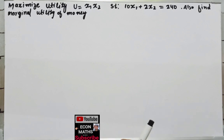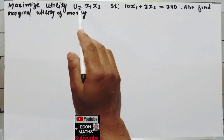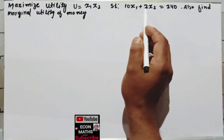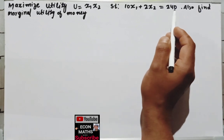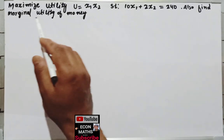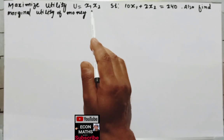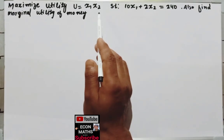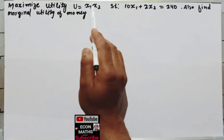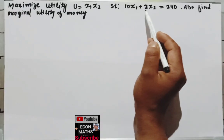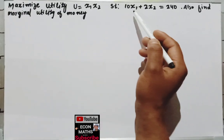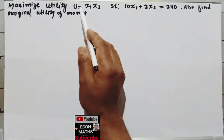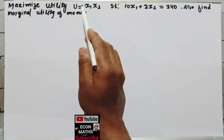We will maximize utility, that is u is equal to x1 times x2, such that 10x1 plus 2x2 is equal to 240. Also find marginal utility of money. We will optimize this function using Lagrange's multiplier. This is our objective function and this is the constraint — the budget of the consumer and the utility function of the consumer.